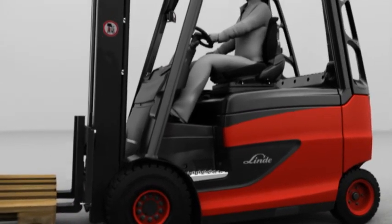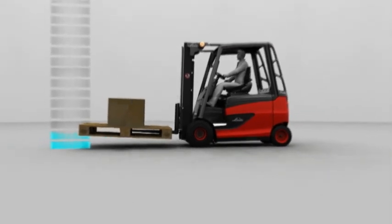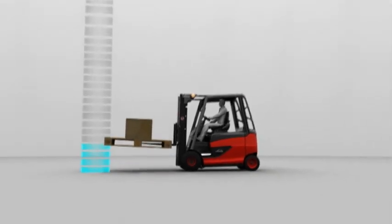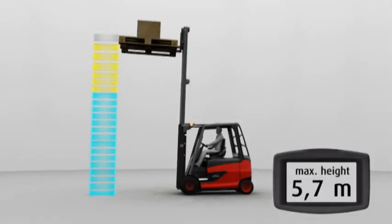It actively assists the driver in the load handling process. It uses defined areas to show the driver when he's approaching the lift height. When the lift height is approaching, the lifting speed is reduced. Once the maximum lift height is reached, the system stops.